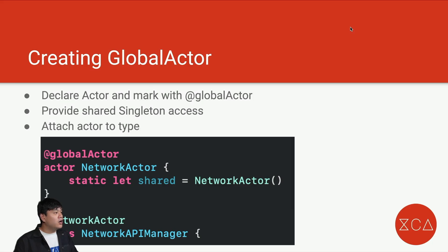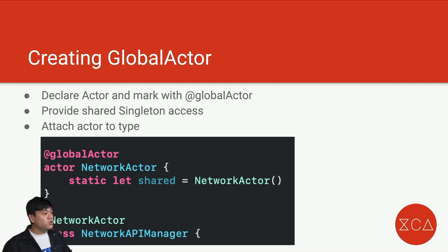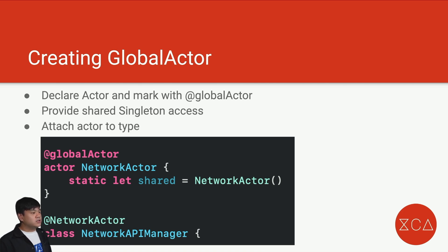How do we create a global actor? If we don't want to use the main actor or main thread, we declare an actor and mark it with the @globalActor attribute. Then we provide a static let shared declaration, which makes it a singleton for access. For any type we want to execute in a particular context or thread, we just mark it with the actor we have created. For example, this NetworkAPIManager is marked with this NetworkActor, so it will always run within the NetworkActor isolation context or thread.